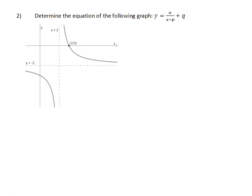Question 2: Determine the equation of the following graph in the form y = a/(x-p) + q. We can get the p and q values from the asymptotes. The vertical asymptote is x = 2 and the horizontal asymptote is y = -2, so our p-value is 2 and our q-value is -2.